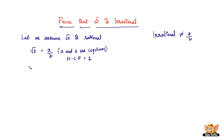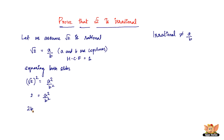Now squaring both sides, we get √2 = a²/b², or 2 = a²/b², which gives us 2b² = a². Let's call this equation 1. This equation shows that 2 can divide a². If 2 can divide a², then 2 can divide a as well.